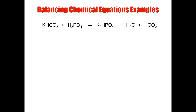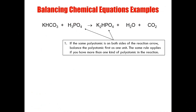For my first example, I have a reaction with two different types of polyatomic ions. I have a carbonate ion here, I have a phosphate ion here, and I have another phosphate ion here in my product. You can see that I have phosphates on both sides of my reaction arrow, so let's refer to rule number one. Rule number one states that if the same polyatomic ion is on both sides of the reaction arrow, you balance the polyatomic ion first as a single unit. The same rule applies if you have more than one kind of polyatomic ion in the reaction.